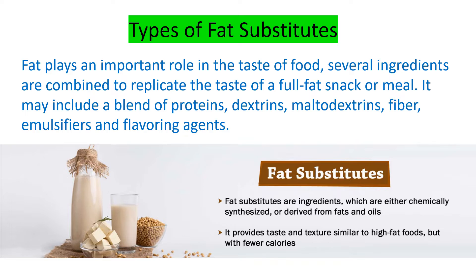So what are the types of fat substitutes? Fat plays an important role in the taste of food. Several ingredients are combined to replicate the taste of full fat snacks or meals. It may include a blend of proteins, dextrins, maltodextrins, fibers, insoluble fibers, and flavoring agents. Generally, fat substitutes are ingredients which are either chemically synthesized or derived from fats and oils, and they provide taste and texture similar to high fat foods but with fewer calories.